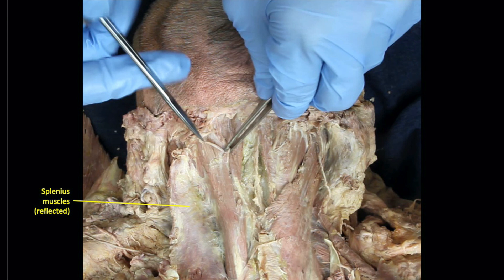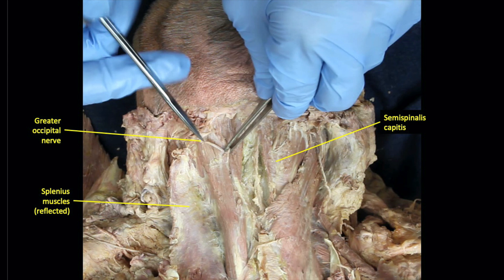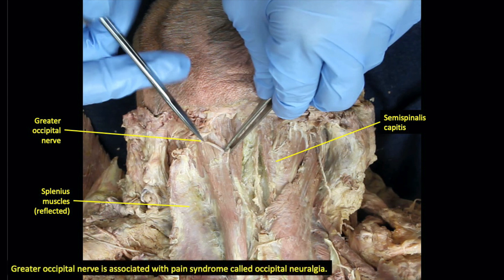As one continues with the dissection, the greater occipital nerve is revealed. The greater occipital nerve is the dorsal ramus of the second cervical spinal nerve. It pierces the trapezius and semispinalis capitis muscles to innervate the skin of the back of the scalp. Although the nerve can be found superficial to the trapezius, the dense fibrous tissue of the ligamentum nuchae often makes it difficult for students to identify the nerve in this tissue. However, once the trapezius is reflected, the nerve is easily seen piercing the semispinalis capitis. The greater occipital nerve is associated with a pain syndrome called occipital neuralgia, in which patients have severe pain in their scalp due to inflammation of the nerve.